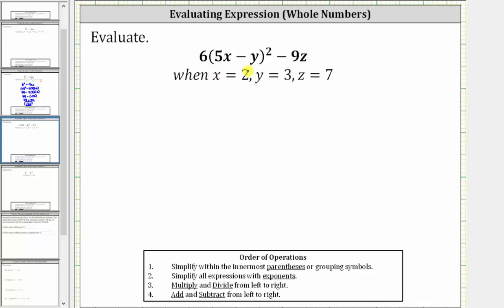We want to evaluate 6(5x - y)² - 9z when x equals 2, y equals 3, and z equals 7.